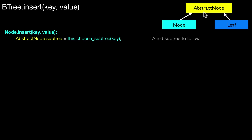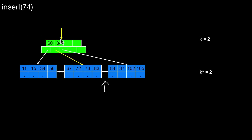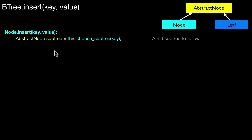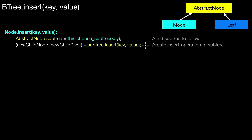Let's look at the insert operation in the Node subclass. We insert a key-value pair and first have to choose the right subtree — just as when inserting 74, we run down the tree as if performing a point query. The chooseSubtree function gives a pointer to the root of the correct subtree. Then we reroute the insert operation to that subtree. This is where polymorphism kicks in: at this point I don't have to know whether the AbstractNode I'm pointing to is a Node or a Leaf — polymorphism handles that.